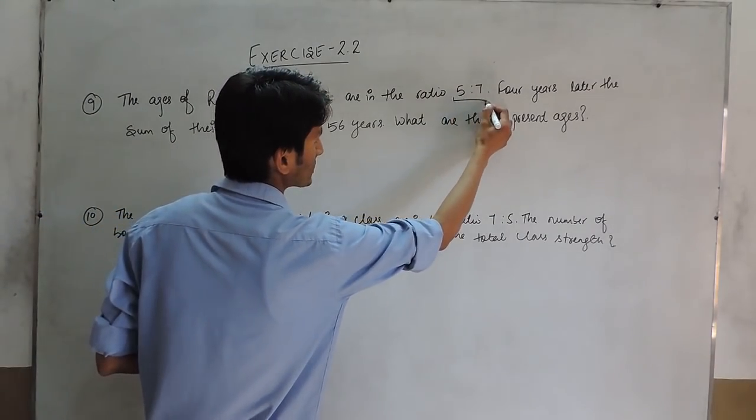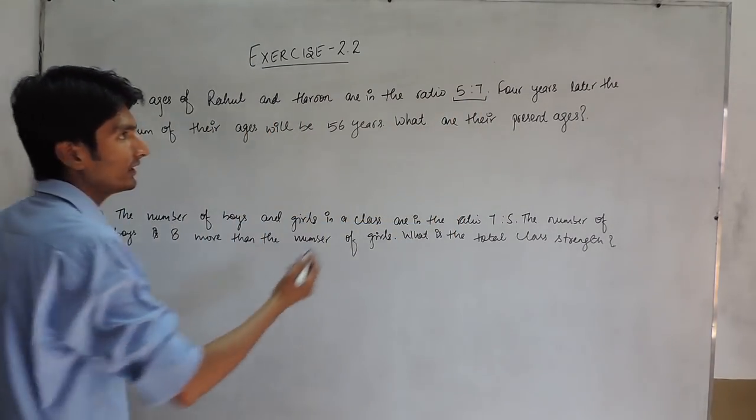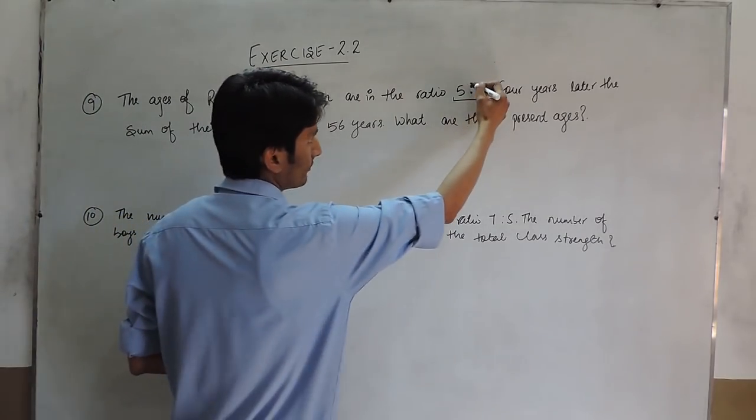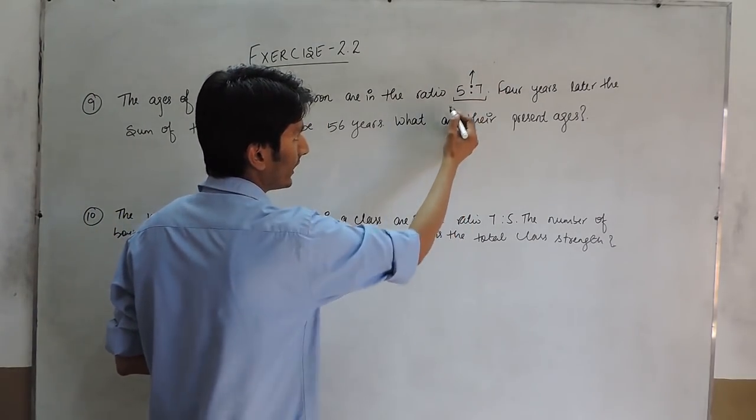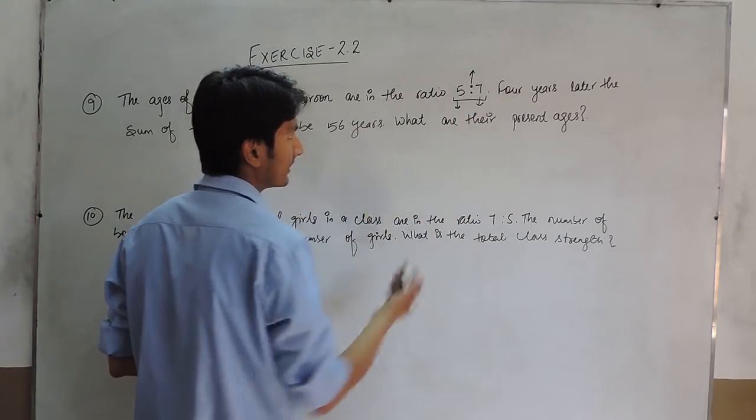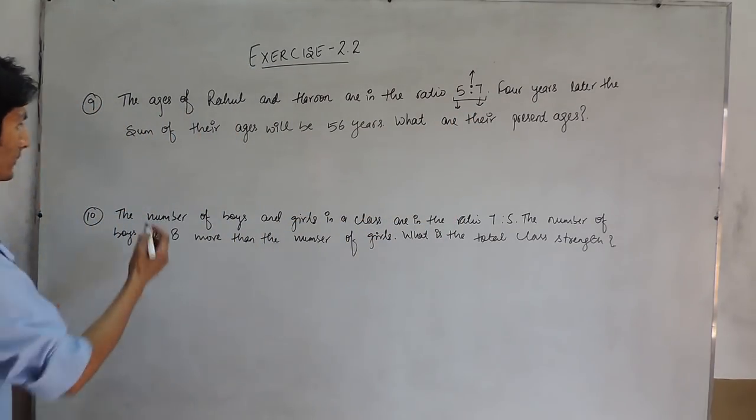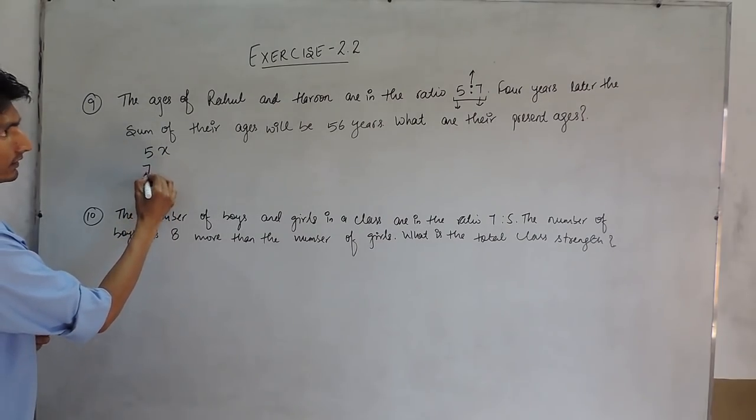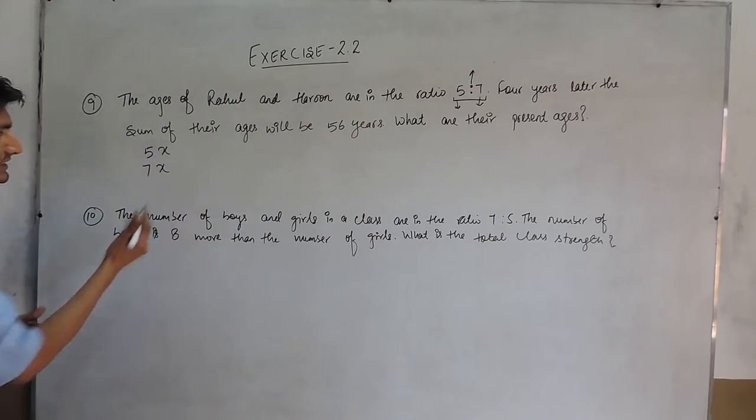We know that their present ages are in the ratio 5:7 and when we have to find the ages, we just have to remove the ratio and multiply these numbers with a variable. So, Rahul's age would be 5x and Haroon's age would be 7x.